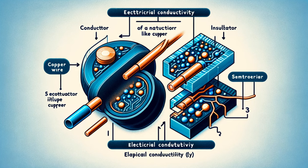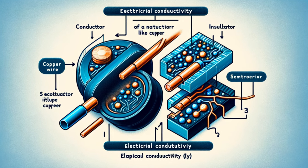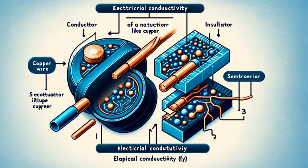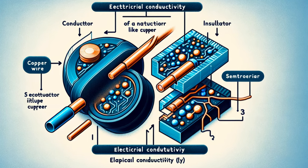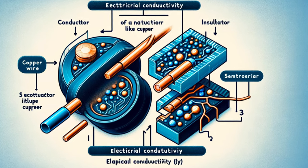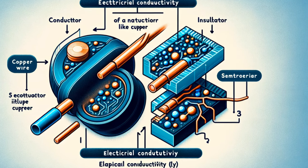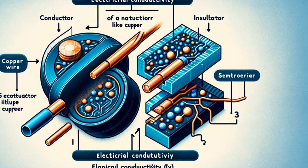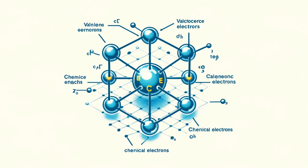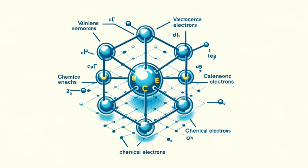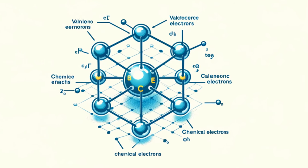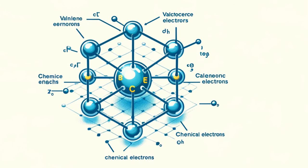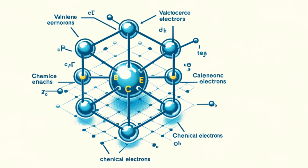In simple terms, semiconductors are materials that have a conductivity between that of a conductor, like copper, and an insulator, like rubber. This unique property allows them to control the flow of electricity in a very precise way.